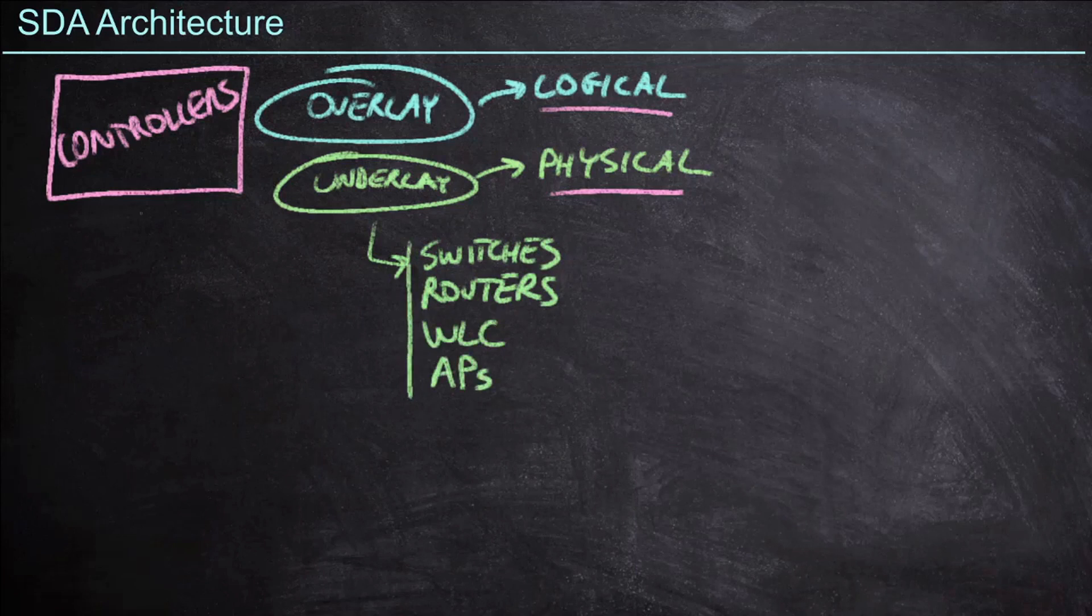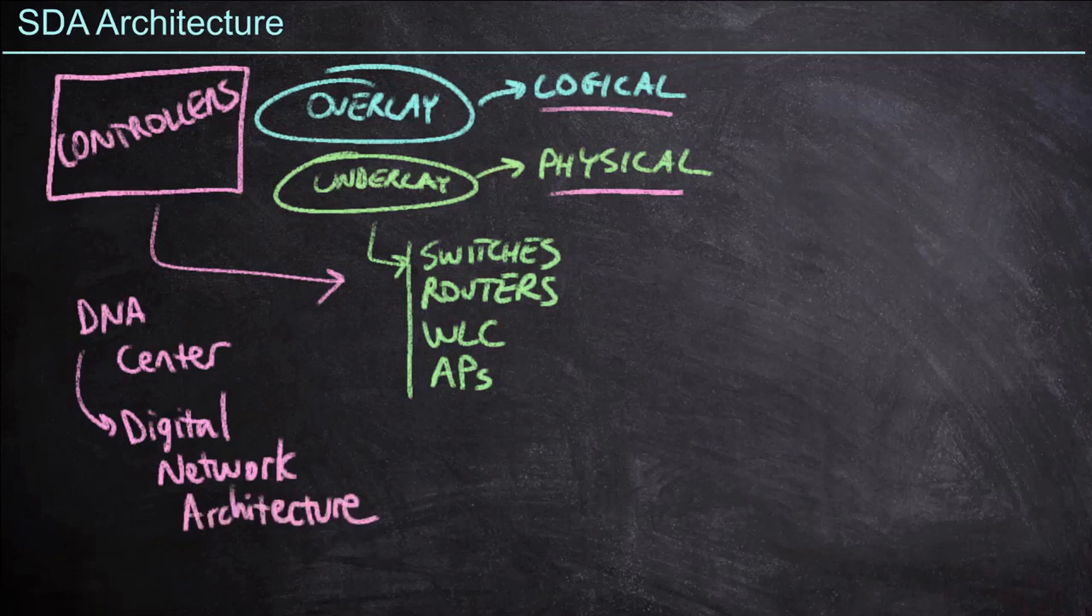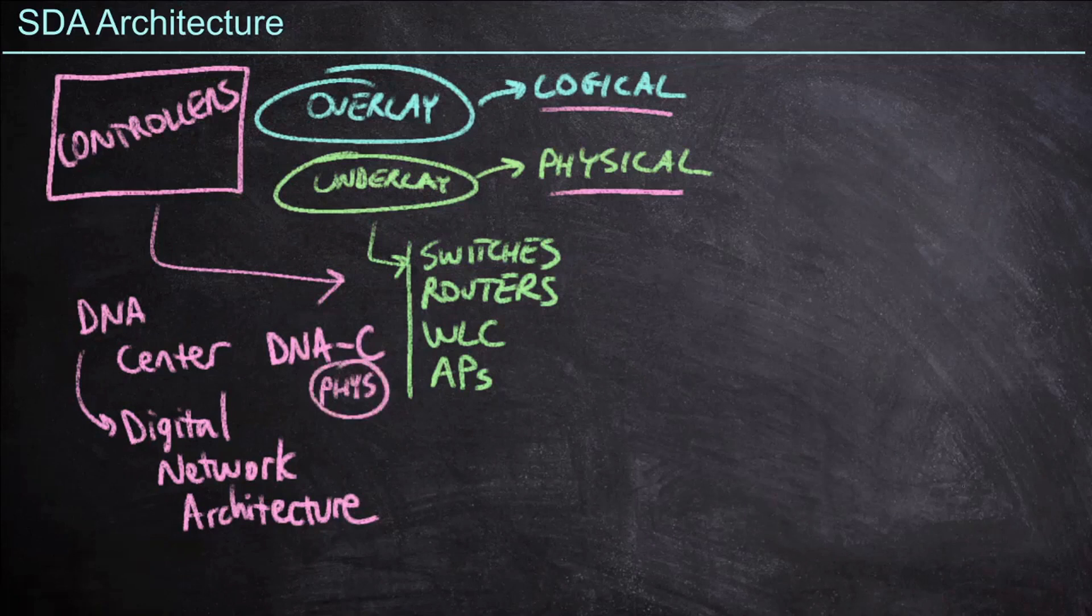Again, these devices need to be configured by the controllers. So what are these controllers that are doing the configuration? Well, the first one is a device called the DNA Center. DNA stands for Digital Network Architecture, and it is part of Cisco's vision for software-defined access. DNA Center can be abbreviated as DNAC, although when we write it out, we say DNA-C. As of today, DNA Center is a physical controller that needs to sit inside your network somewhere, usually inside the data center or maybe at the network core distribution layer.